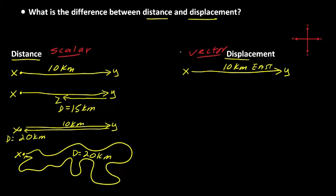This is important: displacement is a vector measurement because it not only includes a quantity and a unit of measurement, but it also includes a direction — in this case, east. You'll notice there's a compass rose showing north at the top, south at the bottom, east to the right, and west to the left. So displacement will always include either a stated direction or an assumed direction. In this first situation, the displacement was 10 kilometers east.